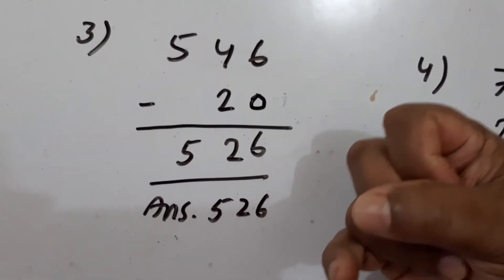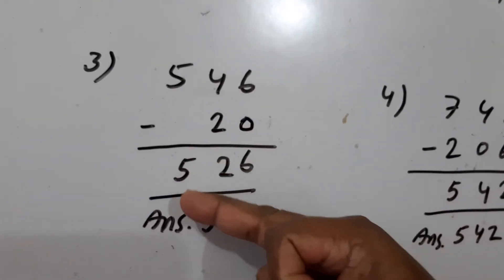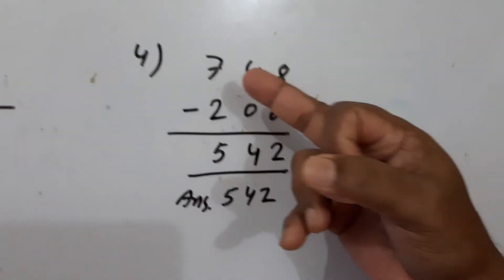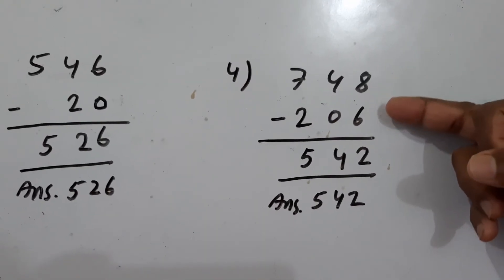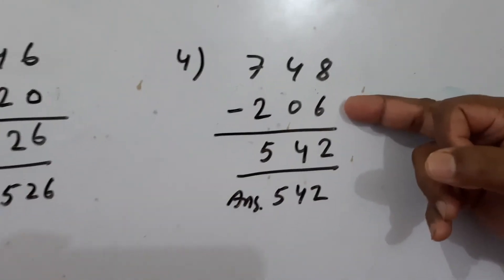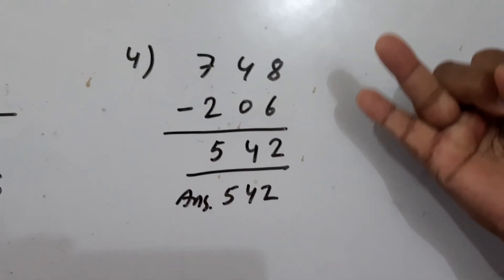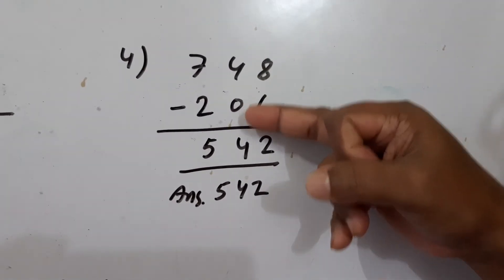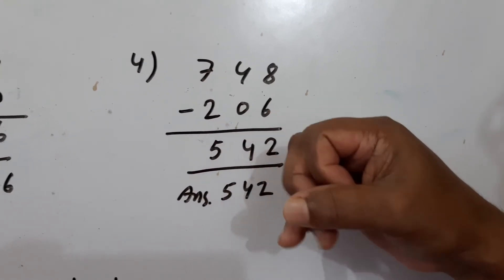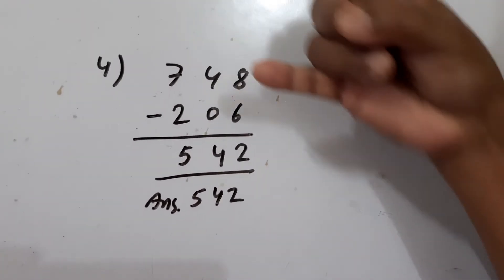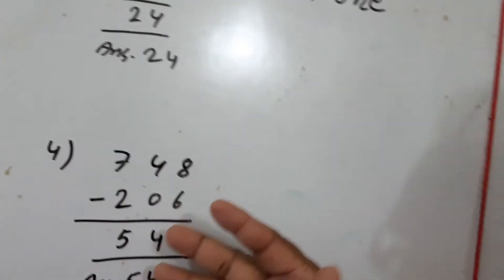This is 546 minus 20. 6 minus 0 is 6. This is 4, this is 2. 4 minus 2: you have to read after 2, 3, 4. That is 2. Write 2 here. Then 5 minus 0 is 5. This is 748 minus 206. We have to subtract 6 from 8: after 6, 7, 8. That is 2. Write 2 here. 4 minus 0 is 4. 7 minus 2: after 2, 3, 4, 5, 6, 7. That is 5.